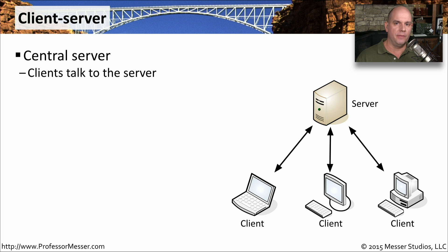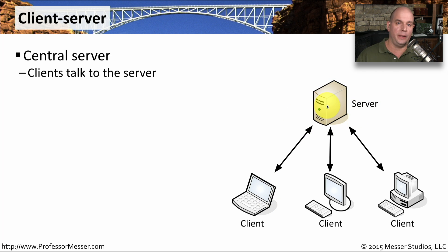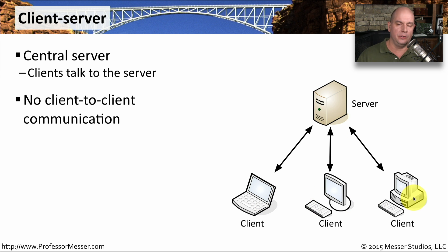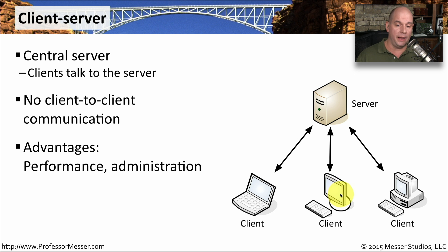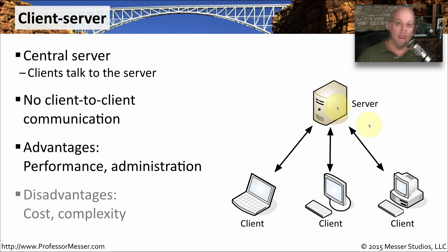Let's move away from pure network topology and talk about the way that applications are architected. In a client-server application, clients such as laptops, tablets, or desktop workstations all talk to a central server to perform their functions. The clients do not talk to each other. The advantages include performance — since the server determines application performance — and ease of administration, since you go to one place to administer the app. The disadvantages are higher cost, as the server must be strong enough to support all clients, and added complexity for deploying client software across end stations.